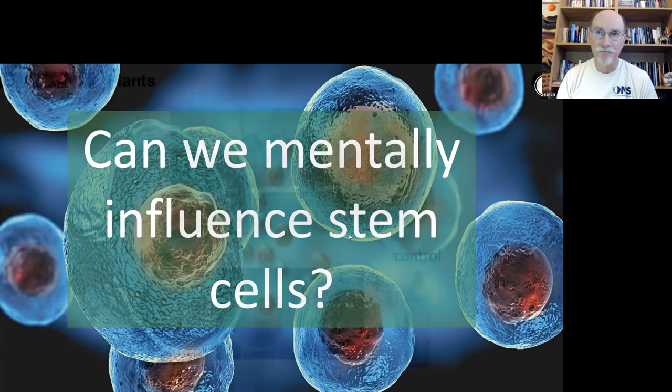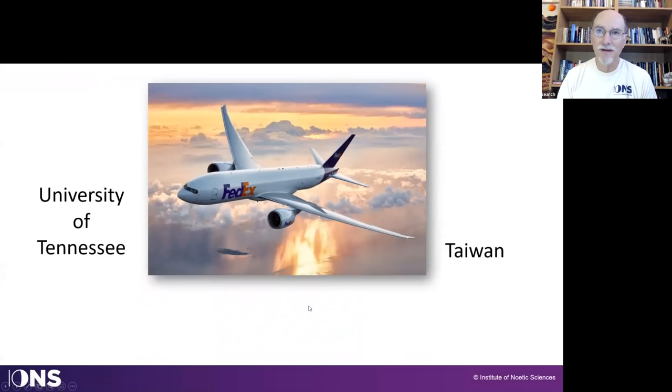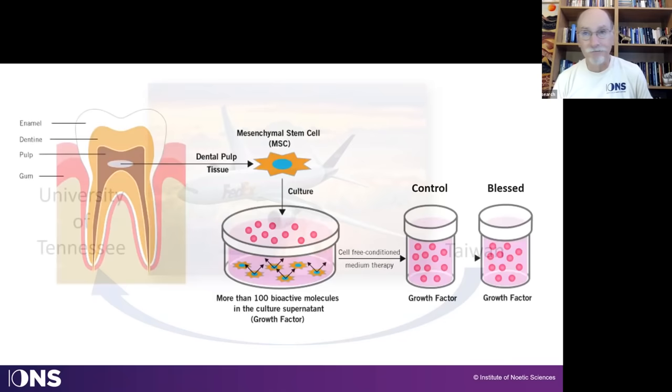We just finished another experiment, again, using blessed water, but to see if it could influence the growth of stem cells. Same group of people, same design, different target: stem cells. So this is interesting because while the other experiments were done in Taiwan, in this case, in order to do the measurements of the stem cells, we had to fly the water that was treated, the control and the treated water from Taiwan to the University of Tennessee, which is where the rest of the experiment was conducted.